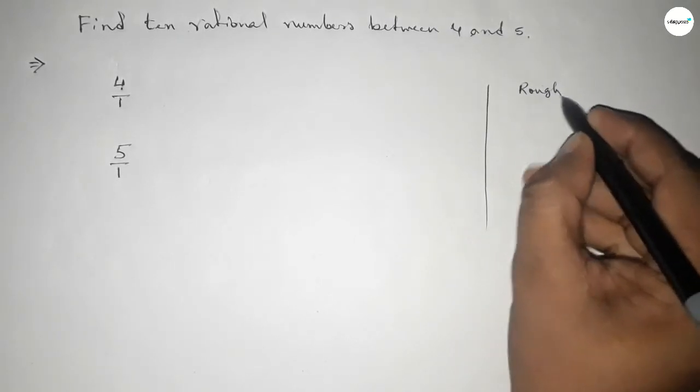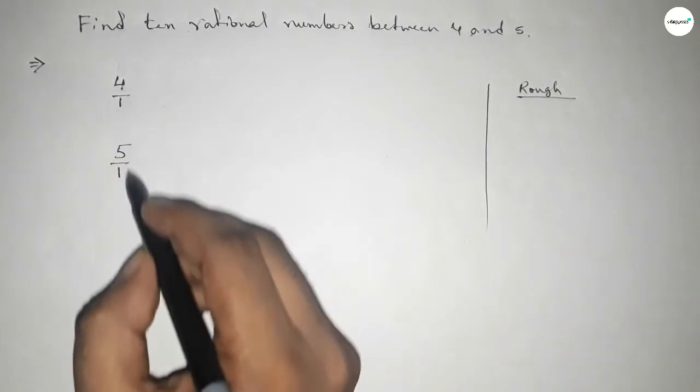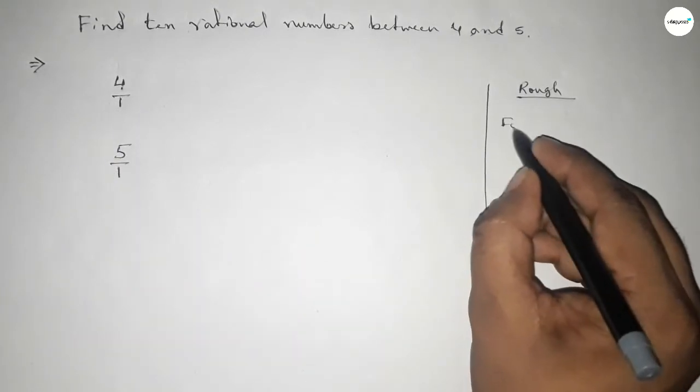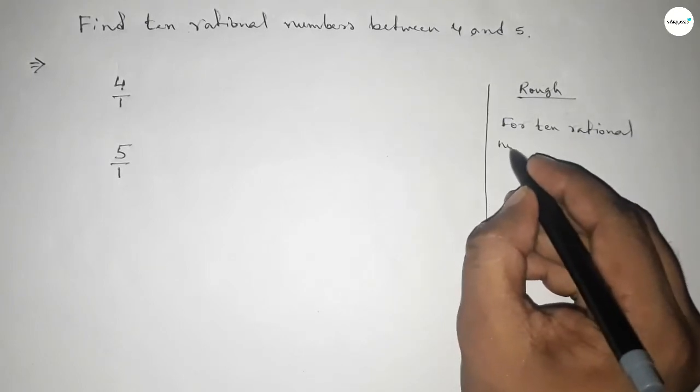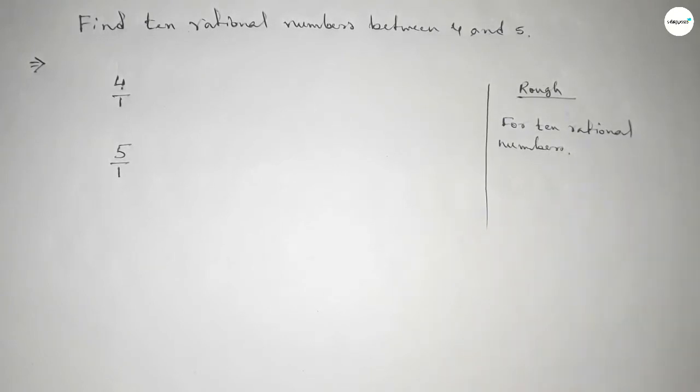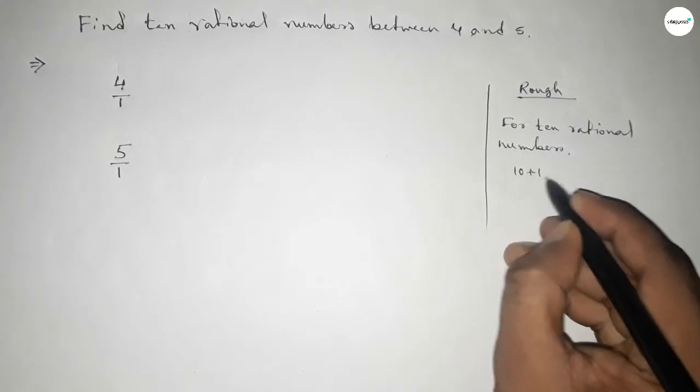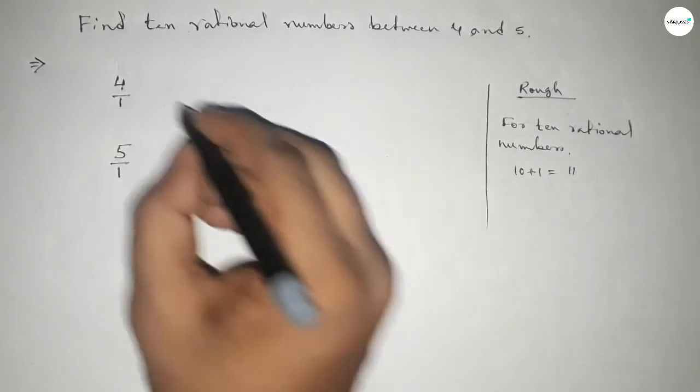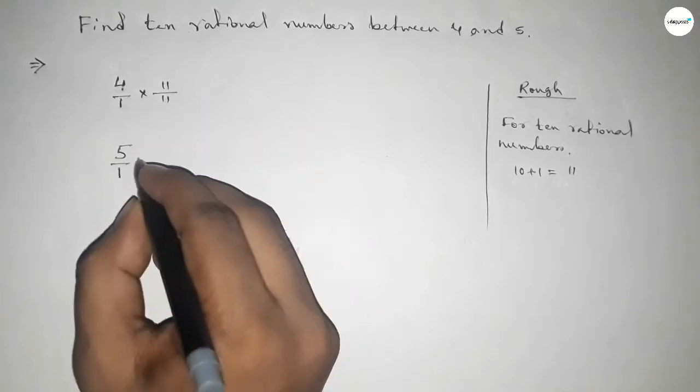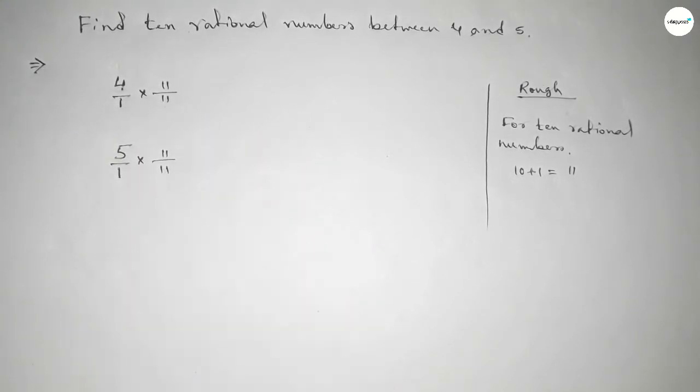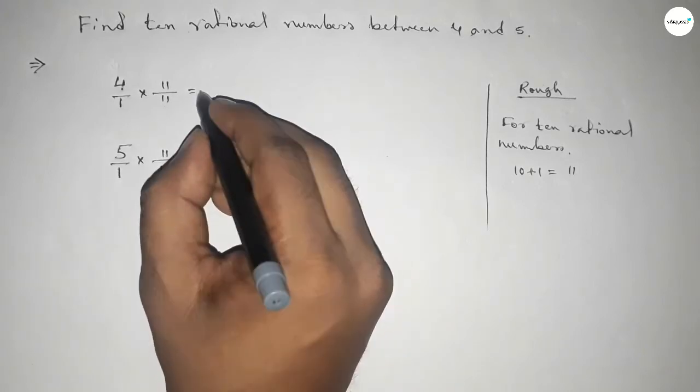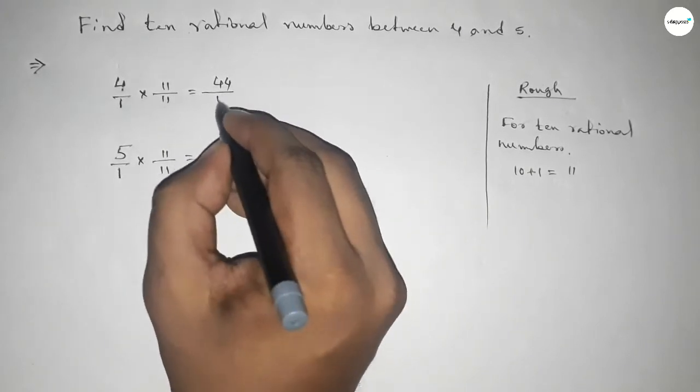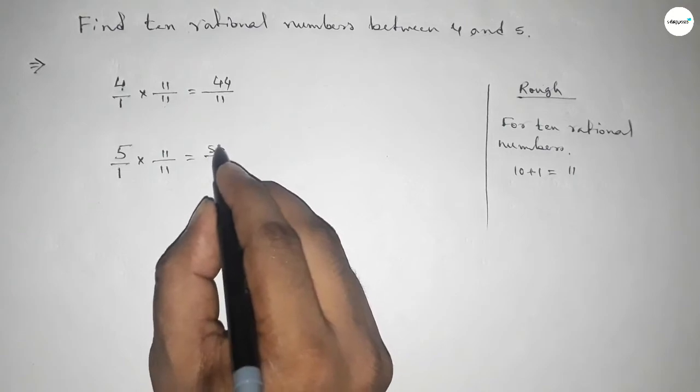Okay, now roughly discussing some important calculation here. The denominators of both are equal, so for 10 rational numbers between any two numbers we have to follow this method. We should multiply up and down by 10 plus 1 equals 11, up and down by this way. Now this is 44 over 11 and this is 55 over 11.